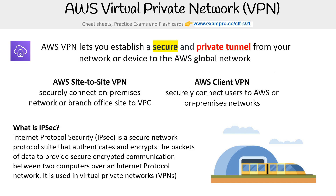One thing we need to understand alongside VPNs is IPsec, which stands for Internet Protocol Security. It's a secure network protocol suite that authenticates and encrypts the packets of data to provide secure encrypted communication between two computers over an internet protocol network, and it is used in VPNs — AWS definitely uses it.